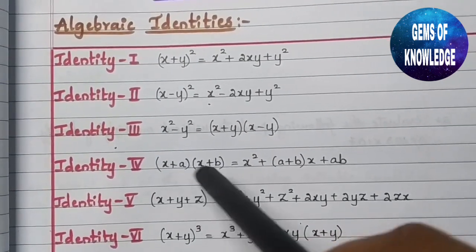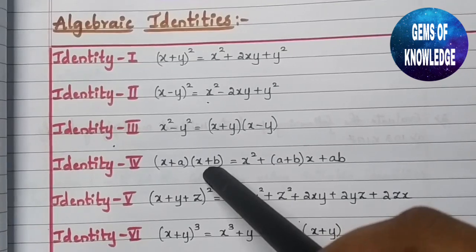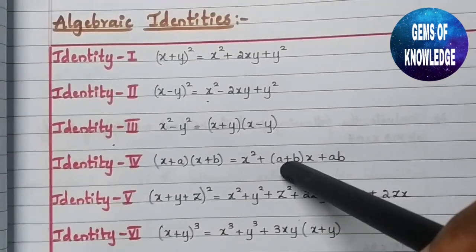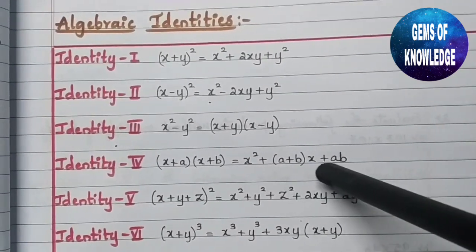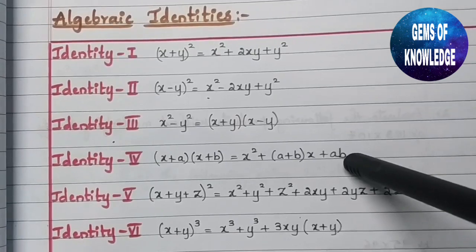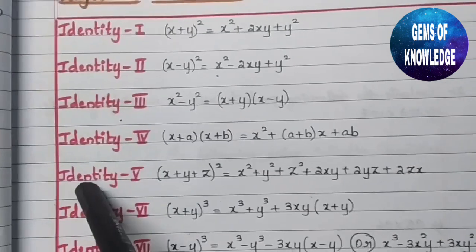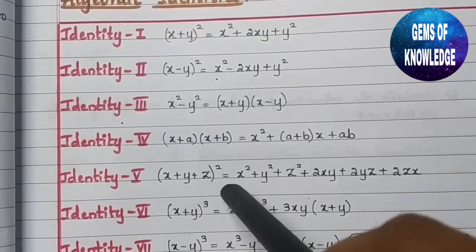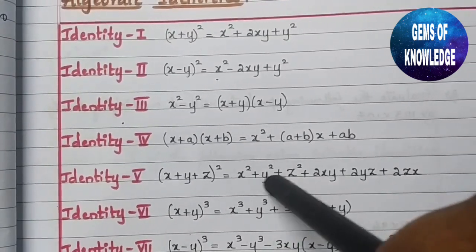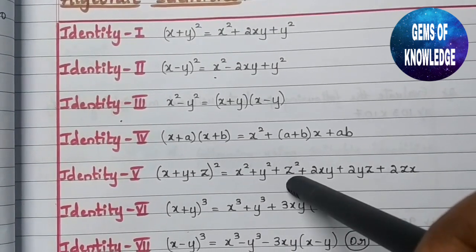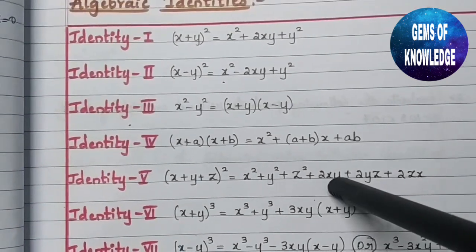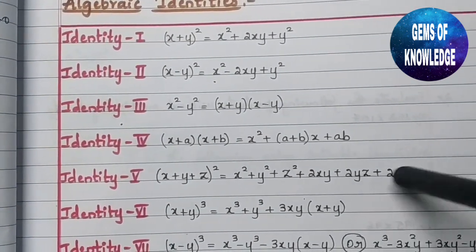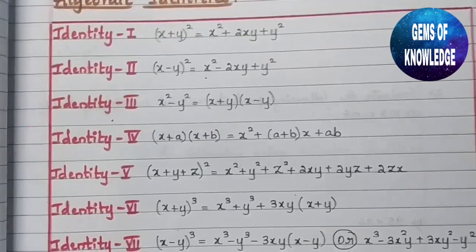The fourth identity is (x + a)(x + b) = x² + (a + b)x + ab. The fifth identity is (x + y + z)² = x² + y² + z² + 2xy + 2yz + 2zx.